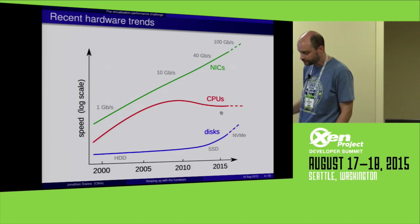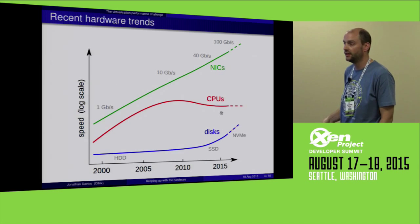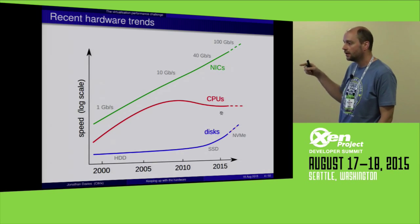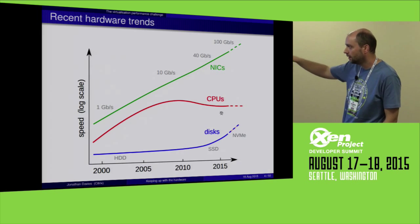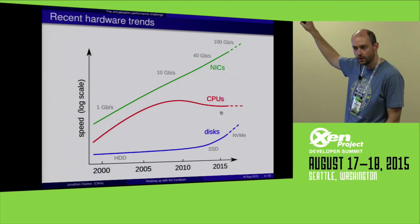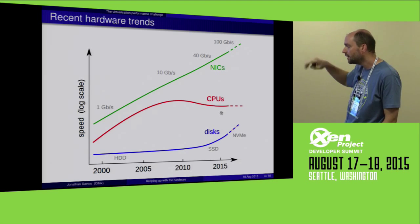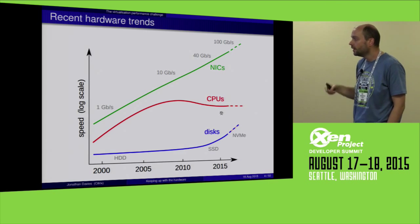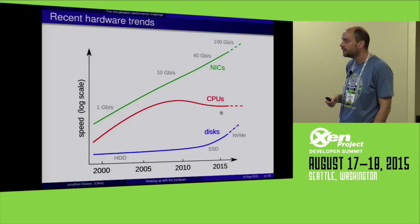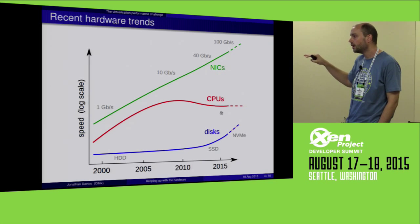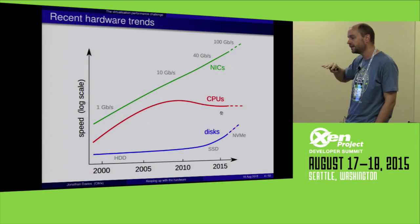What is the challenge? Well, this is my take on it. IO devices are getting exponentially quicker — it's a log scale on the vertical axis. NICs have been increasing in speed exponentially over many years and look set to continue. Discs have been recently getting quicker with new technologies like NVMe, non-volatile memory. On the other hand, the red line shows that CPUs have leveled off, so Moore's law no longer applies and CPU clock frequencies are staying the same.